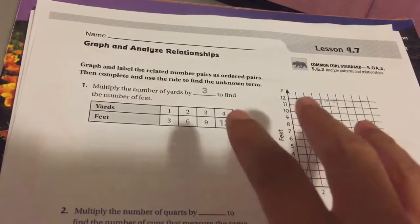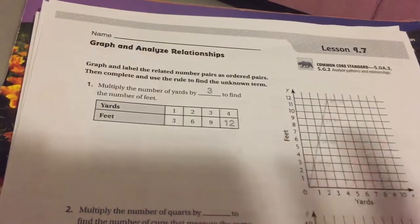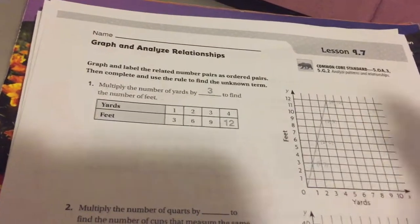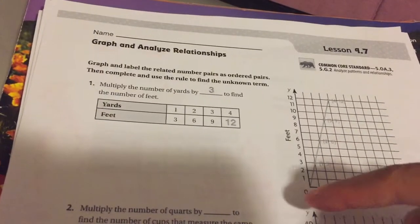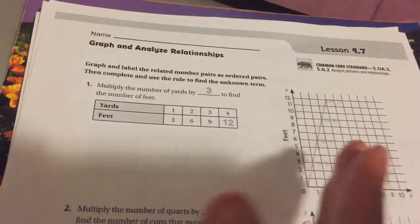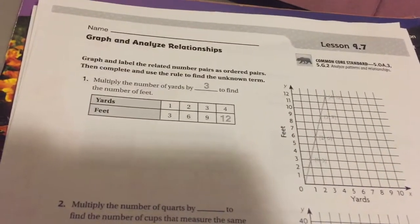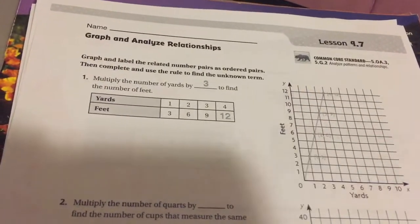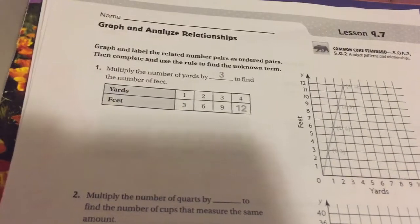And the cool thing about graphs, if it is a specific pattern and there's a certain rule to it, then you'll have a straight line. Now, if there's no pattern to it and it goes up and down, or it goes up very steep and then it goes up just a little bit and then up a lot, then that won't have an equation that will follow a certain rule.